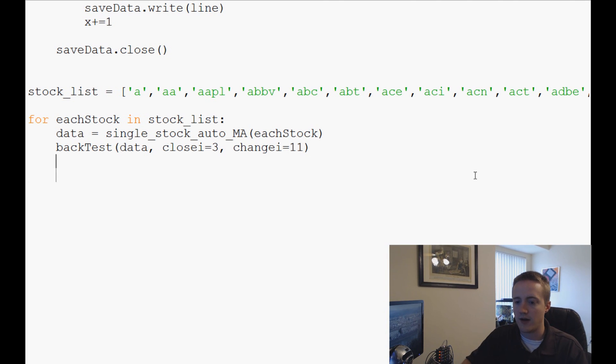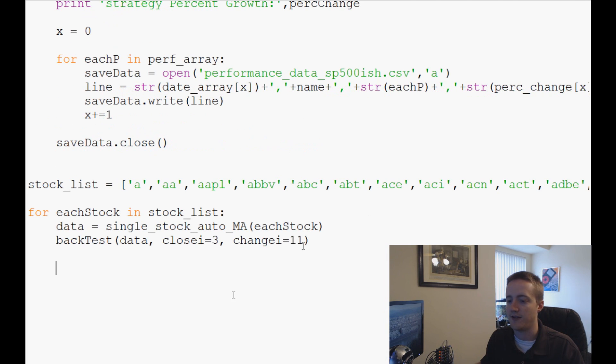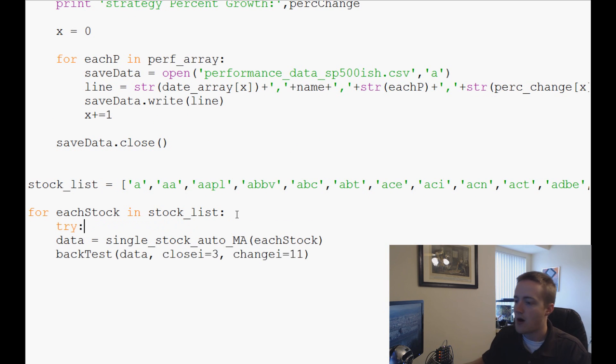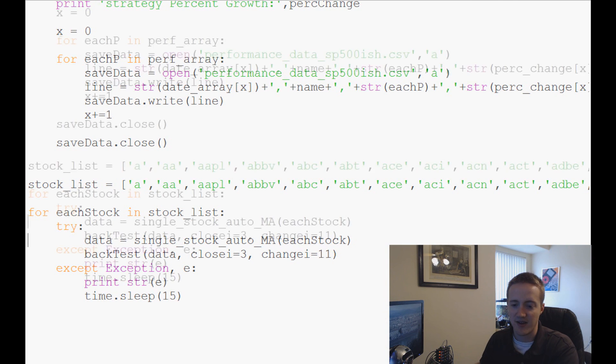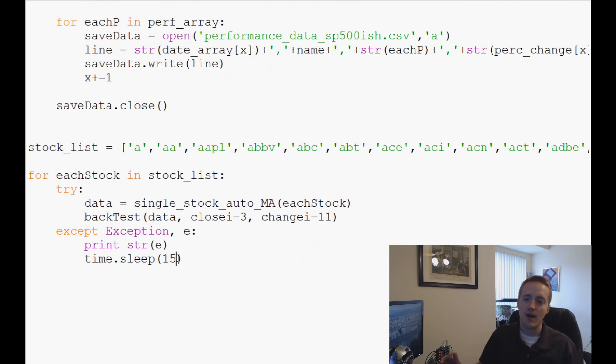The only other thing I'll do is we'll add a try and except in here just in case because we've added a lot of stuff and we could definitely have some sort of error. So print or exception E print string E time sleep and we'll sleep for like 15 seconds just so we can see it without zooming by.